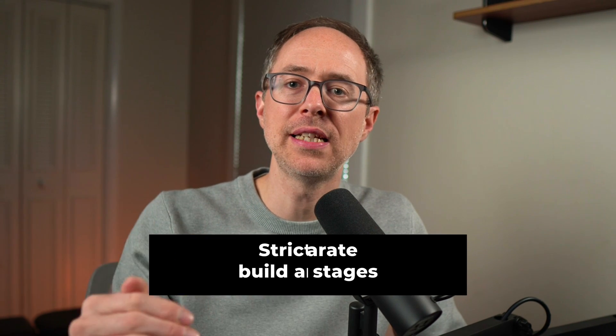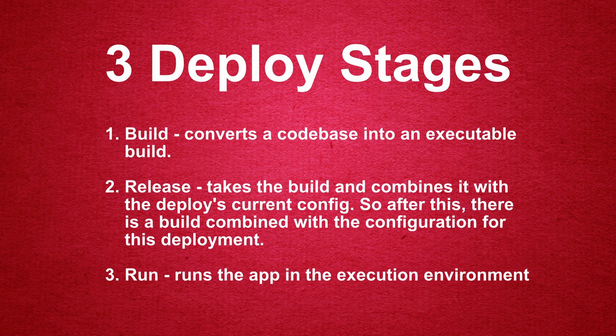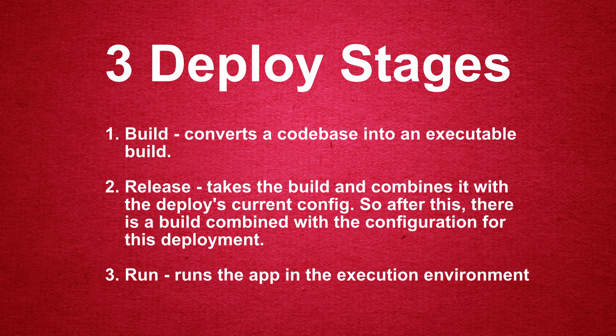Number five is build, release, run — strictly differentiate between build and run states. There are three deploy stages: the build, which converts a codebase into an executable; the release, which takes the build and combines it with the deploy's current config; and the run, which runs the app in the execution environment. There must be strict separation between these stages — it should be impossible to make changes to code at runtime since you can't pass those changes back to the build phase. Build it once, run it many times.